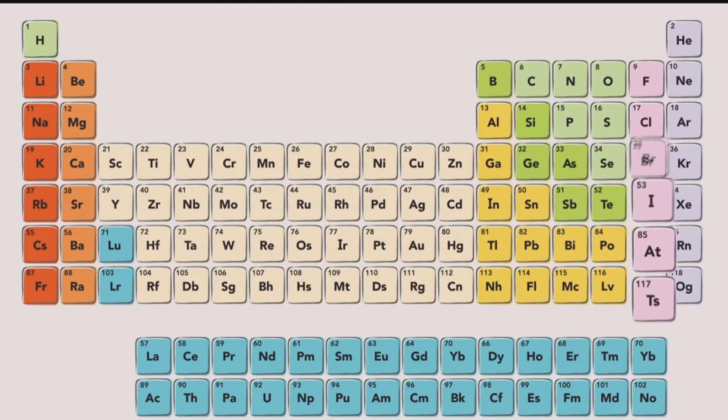Because the chemical behavior of an element is related to its valence electrons, elements in the same group of the periodic table share many chemical and physical properties.